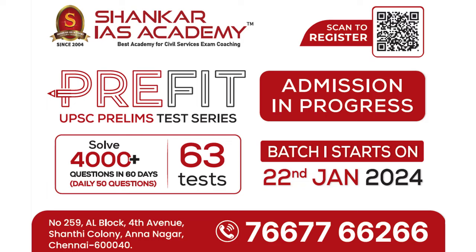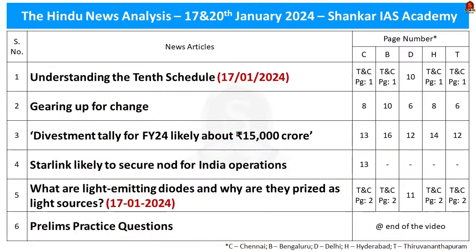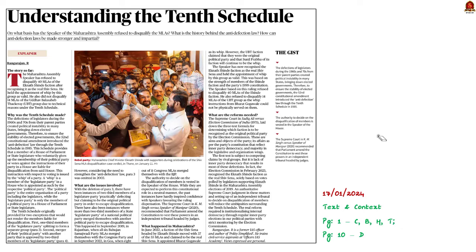Let us look into the list of articles for the day and get into the first news article discussion. This text-in-context article explains about the 10th Schedule of the Indian Constitution. When the 10th Schedule was constituted, it was believed that the provisions will be a panacea — a solution — for political corruption and horse trading.